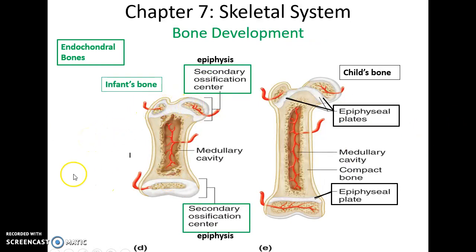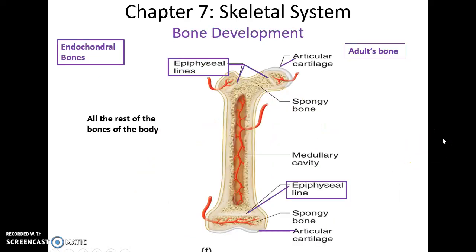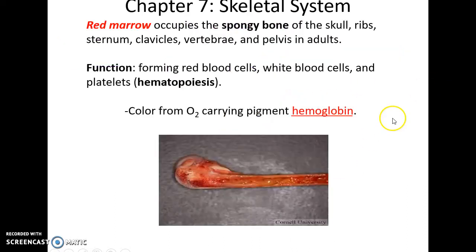Blood vessels become incorporated and the medullary cavity begins to form. Eventually secondary ossification centers form in the proximal and distal epiphyses, calcifying those ends as well. The fetus is born as an infant with bones that are more flexible and have more cartilage. As the infant grows older, epiphyseal plates of hyaline cartilage form where bone length growth occurs, and articular cartilage remains at the smooth ends. In the adult bone, the epiphyseal plates become calcified into epiphyseal lines — no more growth in length — but articular cartilage remains.